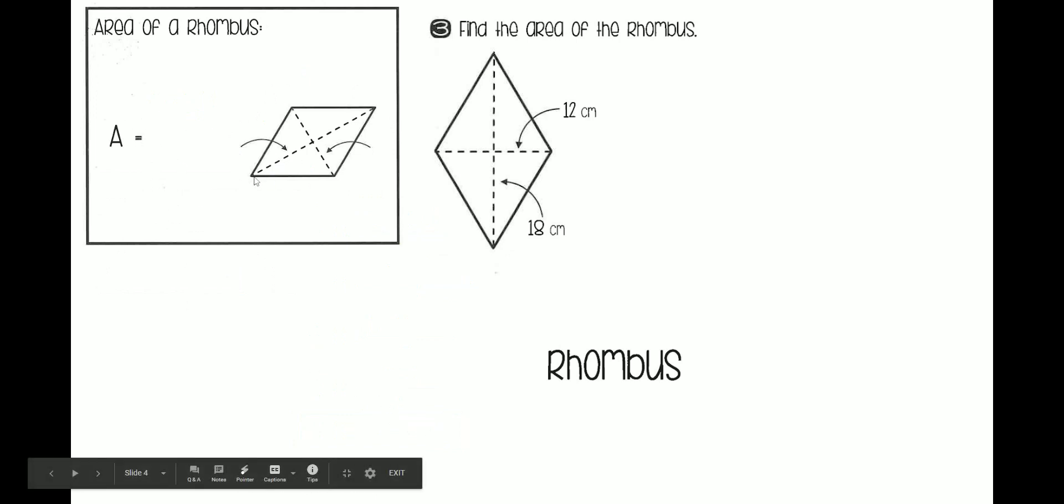You need to know the diagonals. So it's diagonal 1 times diagonal 2 divided by 2. Diagonal 1 is this line right here. This segment, it goes from one corner to the next. And diagonal 2 is this segment, which goes from this corner to the opposite corner.